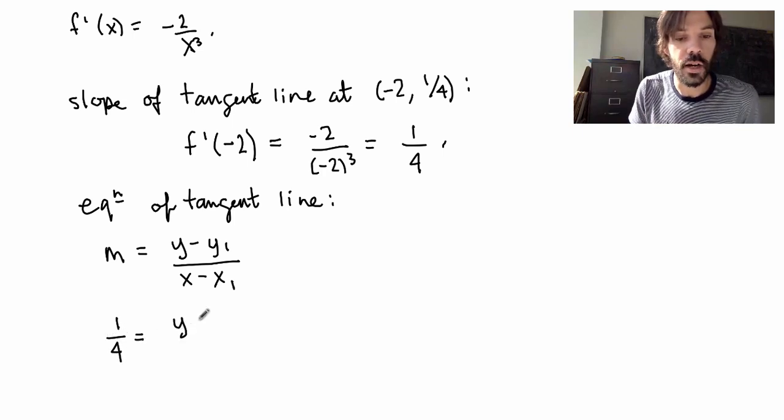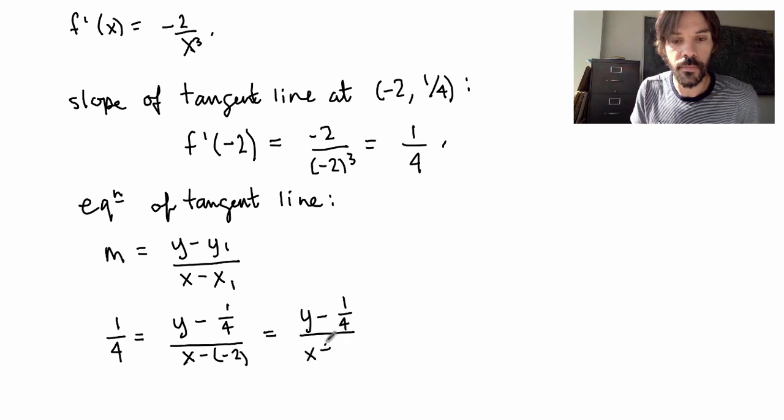So for us, we know that the slope is equal to 1 over 4. Here I have y minus, so I have one point on the line, which is this. So I'm just going to replace this here: 1 over 4 equals y minus 1/4 over x minus minus 2. This is just equal to y minus 1 fourth over x plus 2.